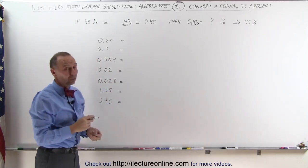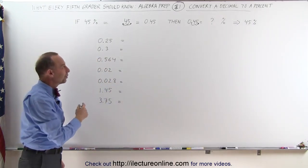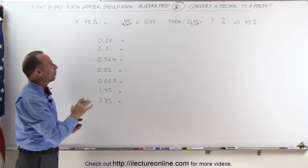To turn a percent to a decimal, we move the decimal place to the left two spots. To turn a decimal to a percent, we move the decimal place over to the right two spots.